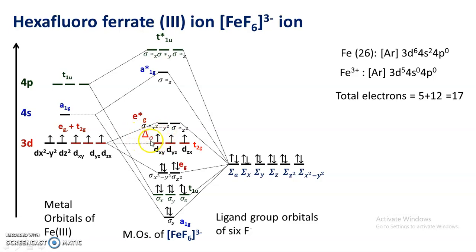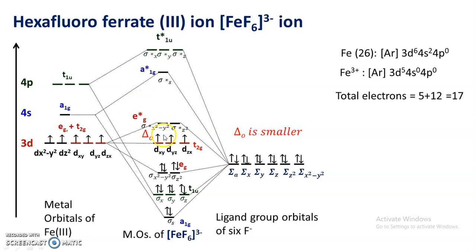The value of delta O (Δo) also matters here. Because Δo is small — smaller than the pairing energy — the 16th electron prefers to enter the eg* (anti-bonding) level rather than pair up in the t2g level. Since the pairing energy is greater than Δo, the 16th electron enters the eg* (σ* x²−y²) orbital. The 17th electron also enters the eg* level.